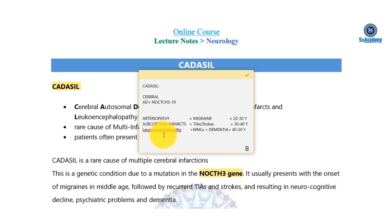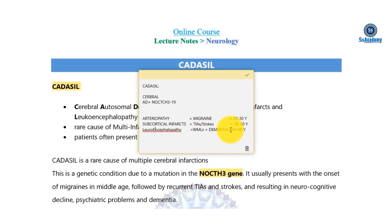To summarize: leukoencephalopathy means white matter lesions and dementia. The disease progresses through phases — migraine with TIAs and strokes between 30 to 40 years, followed by white matter lesions and dementia between 40 to 50 years of age. These are the phases of CADASIL that you need to remember.